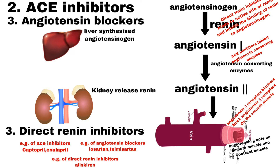Number 4 is Direct Renin Inhibitors. Direct Renin Inhibitors bind to the active site of renin and inhibit the binding of renin to angiotensinogen, which is the rate determining step of the RAS system. Hence blood pressure is reduced. The example of Direct Renin Inhibitors is Aliskiren.